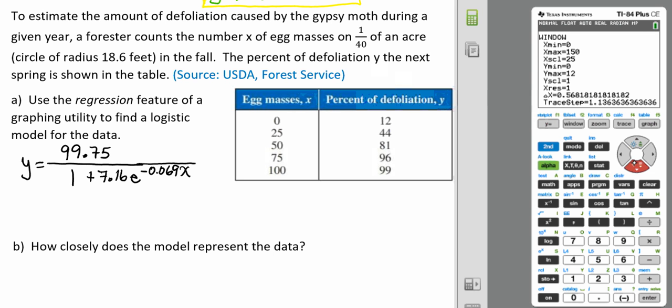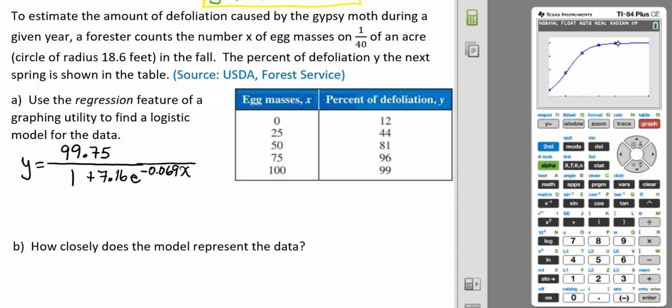For my Y minimum, we have a minimum of 12, so I'm going to keep that at 0. But my maximum was 99, so I'm going to make that 110 and count by 25. Then we're going to hit graph. So we're going to see our points from our scatter plot and how our model fits that pretty much perfectly.